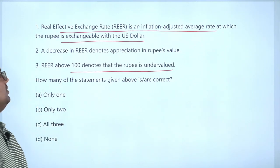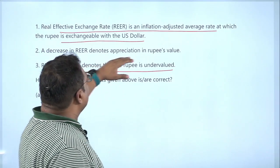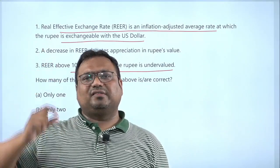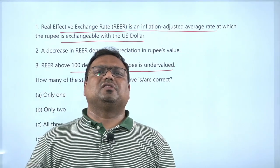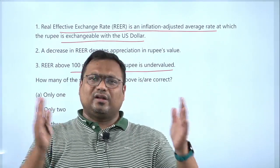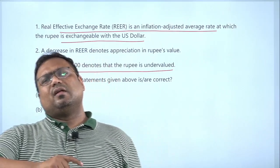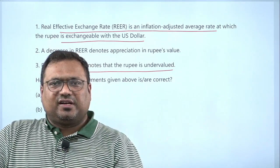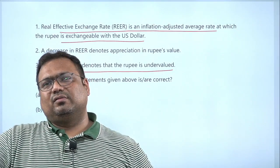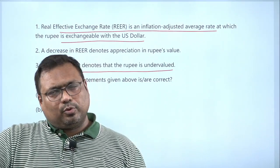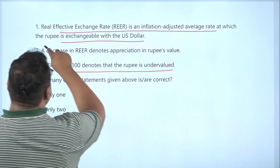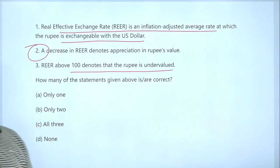Second statement: a decrease in REER denotes appreciation in rupee value. As we know, a decrease in the exchange rate reflects depreciation, and an increase in the exchange rate reflects appreciation. The same logic applies to both REER and NEER — you do not have to remember them separately. If REER value increases, rupee appreciates; if REER value decreases, rupee depreciates. So the statement that a decrease denotes appreciation is wrong — decrease actually reflects depreciation.